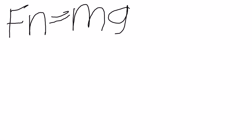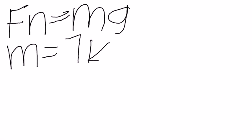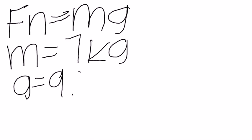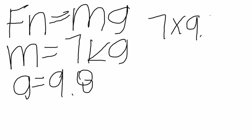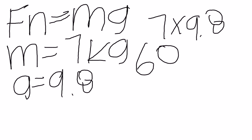Number 5: a 7 kilogram ice cube is sliding across the table at a constant velocity. Calculate the normal force. Normal force is mass times gravity. The mass is 7 in this problem and the gravity is 9.8. So 7 times 9.8 is 68.6 newtons.